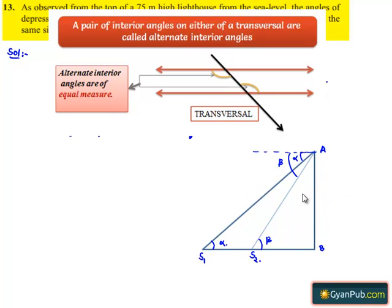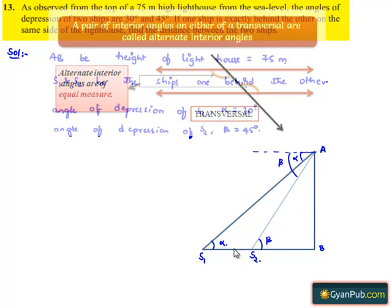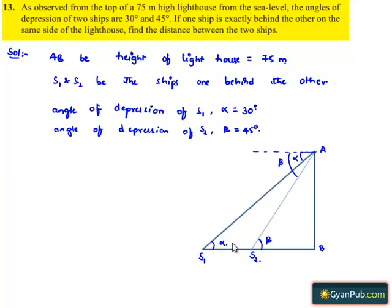Because when lines are parallel and a transversal is passing through them, alternate angles will be equal. So at S1, angle alpha is equal to 30 degrees and at S2, angle beta is equal to 45 degrees, and we have the height of the lighthouse is 75 meters. We need to find the distance between the ships, that is S1S2.